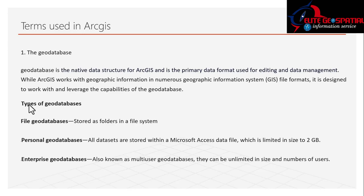The Personal Geodatabase stores all data within a Microsoft Access data file and is limited to just 2 GB. It is suitable for small projects between 0 and 2 GB. It functions similarly to the File Geodatabase, except it uses Microsoft Access and is saved as a database file rather than a folder. The Enterprise Geodatabase, also known as the multi-user geodatabase, can be unlimited in size and supports multiple users — it is mostly used in organizations.